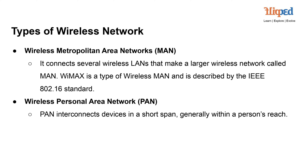Bluetooth is a popular example of a wireless PAN technology. It enables devices like smartphones, headsets, laptops, smartwatches, and other portable gadgets to communicate with each other wirelessly within a short range. Bluetooth technology facilitates various applications, such as hands-free calling, file sharing, and connecting peripherals like keyboards and mice to computers.